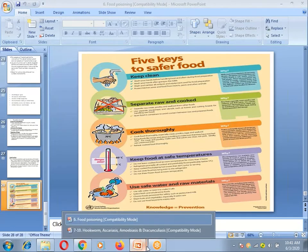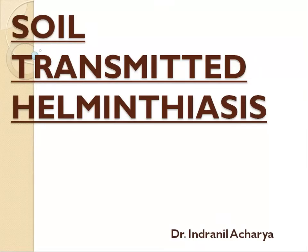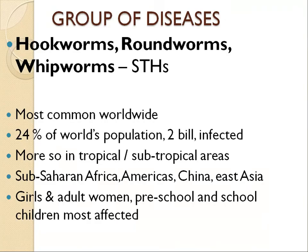We now move to the last chapter in the intestinal group of diseases — soil transmitted helminths. Hookworms, roundworms, and whipworms are called STHs or soil transmitted helminths. Their life cycles can be a little confusing, so recollect your microbiology knowledge. These are the most common worldwide worm infections — perhaps me and you have suffered from them in childhood. Twenty-four percent of the world population, about 2 billion, is infected with worms, more so in tropical, subtropical, and third-world countries.